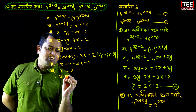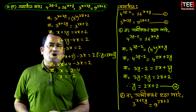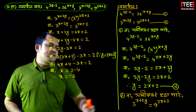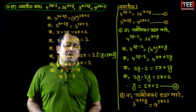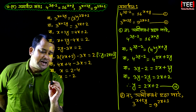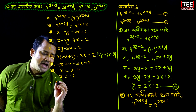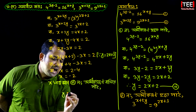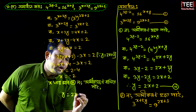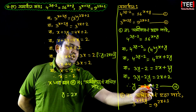So that is minus 4. So x is equal to minus 2.